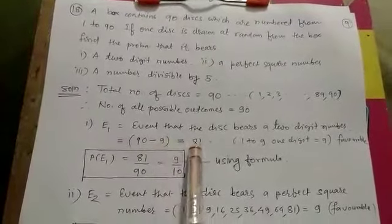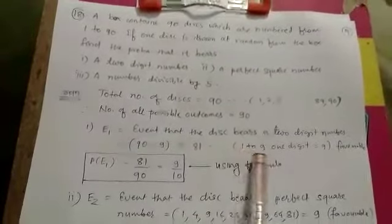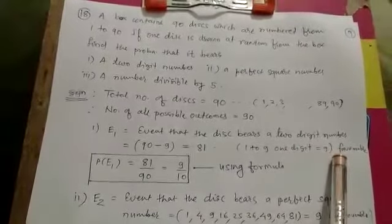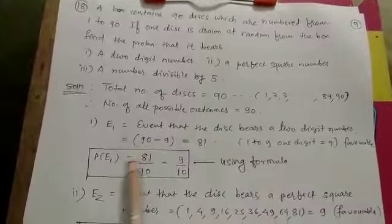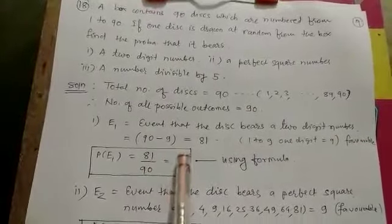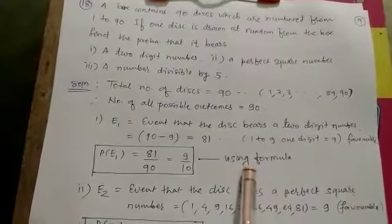So 90 minus 9 equals 81. I have mentioned here that 1 to 9 is one-digit number, which is 9 favorable outcomes. So by using formula, P of E1 equals 81 upon 90 equals 9 by 10.